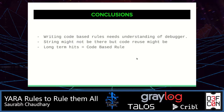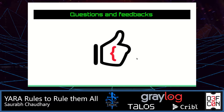Conclusion: writing code-based rules needs an understanding of debuggers, but it is the efficient approach. Strings are not the best thing to write rules on because over time they will become obsolete. So always look for code reuse functionality and build your YARA rules on that. Thank you so much. I'll take questions and feedback. Thank you so much Blue Team Village for this opportunity — please let me know if you have any questions.